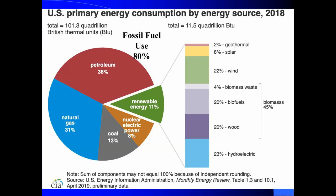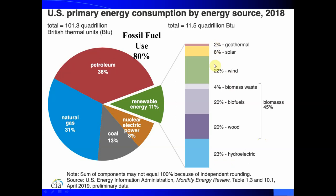Here is our energy budget using 2018 data. Petroleum is the most widely used at 36%. Natural gas, which has increased dramatically over recent decades, is about 31%. Coal is about 13% and decreasing every year — it's the dirtiest of the three fossil fuels. Our renewable energy budget is about 11%, with biomass making up about 45% of that, hydroelectric at 23%, wind at 22%, solar at 8%, and geothermal at 2%. The other 8% of our energy budget comes from nuclear energy.